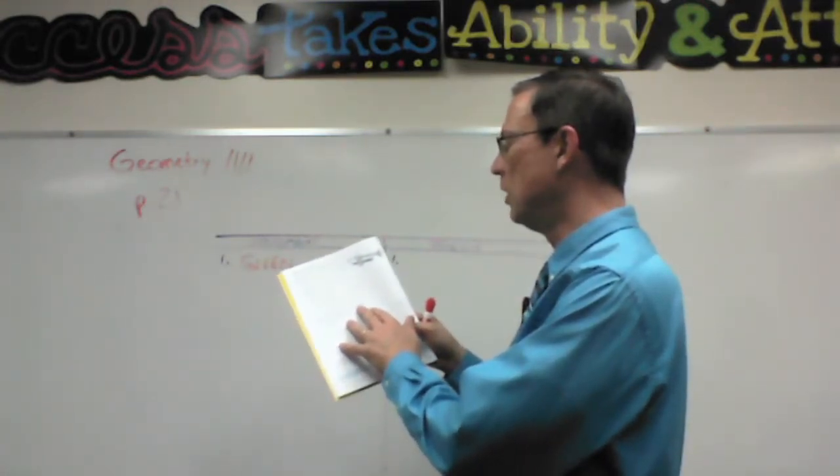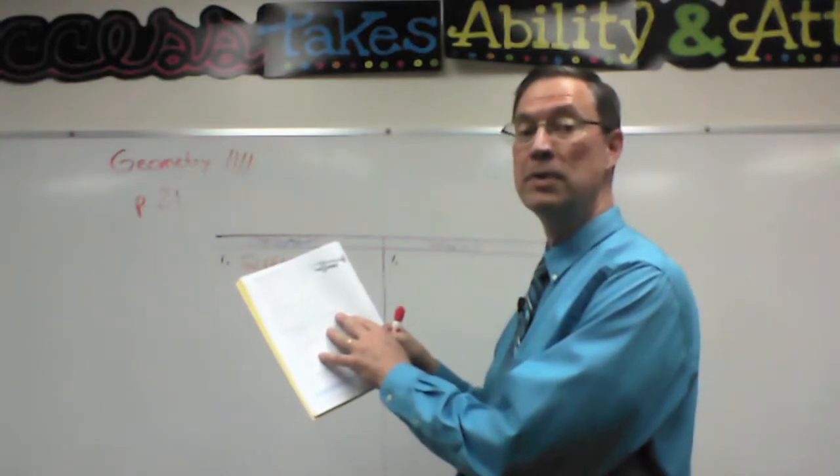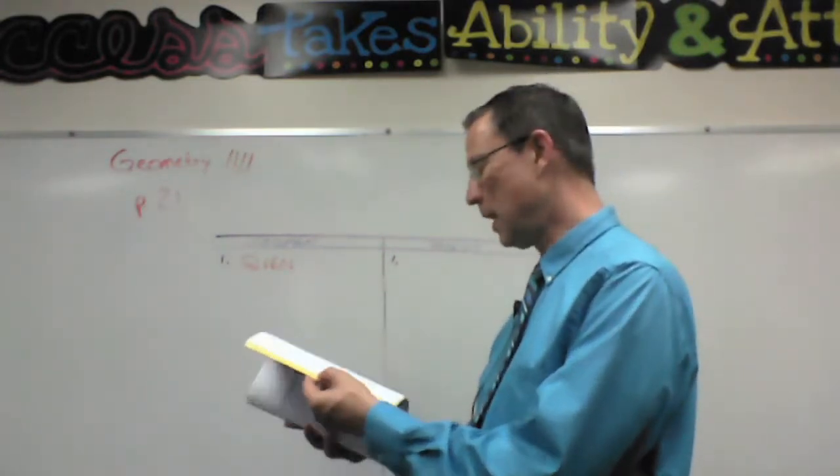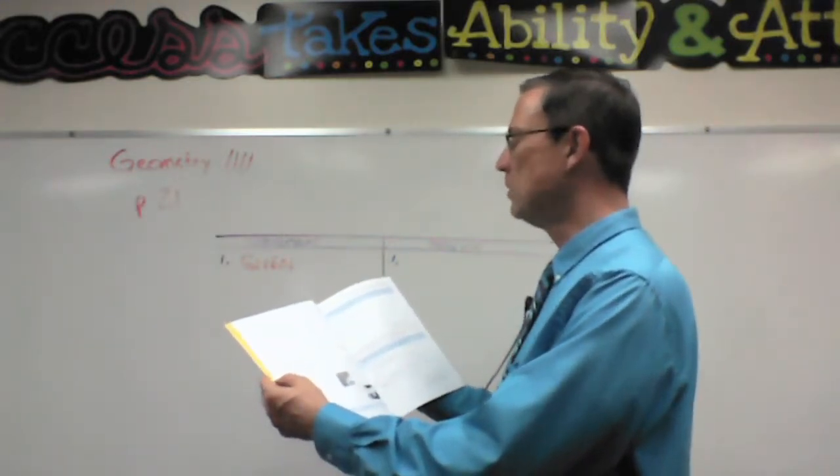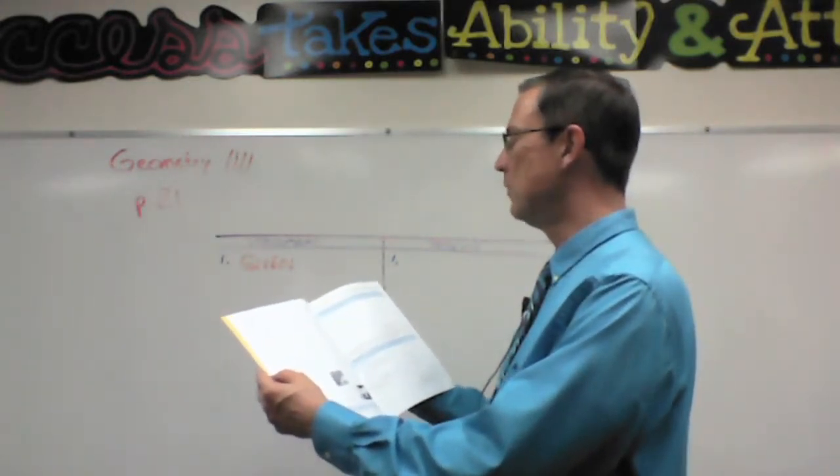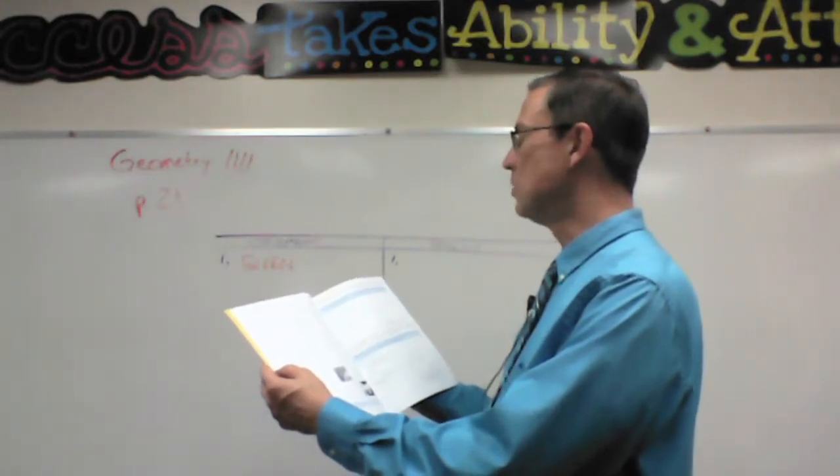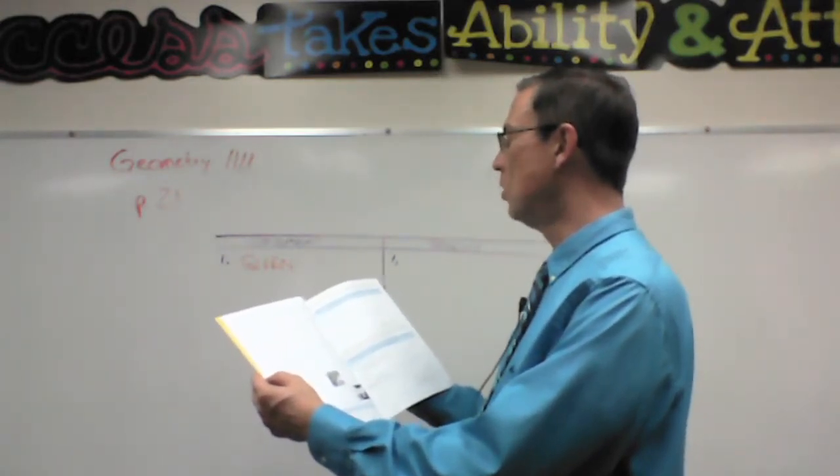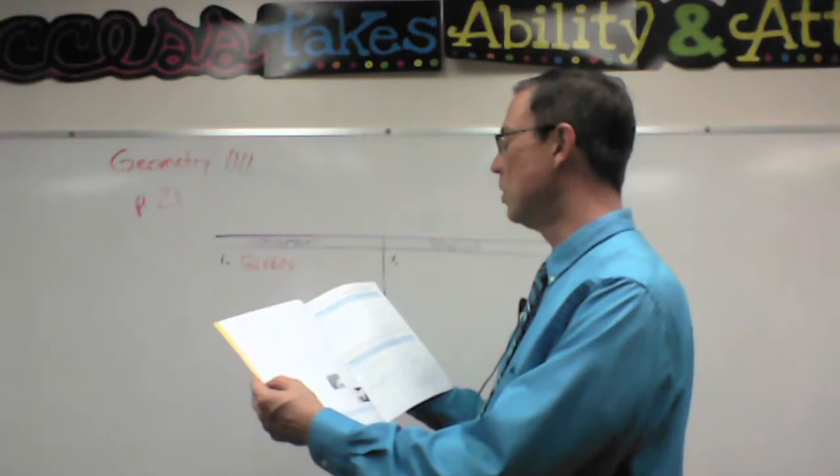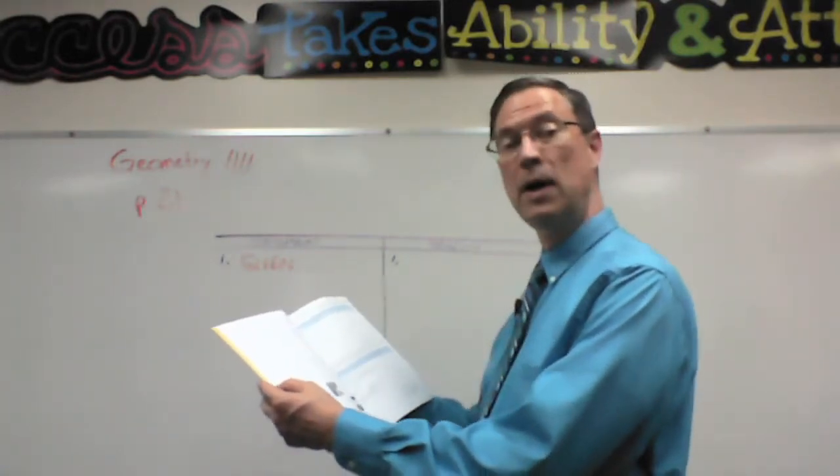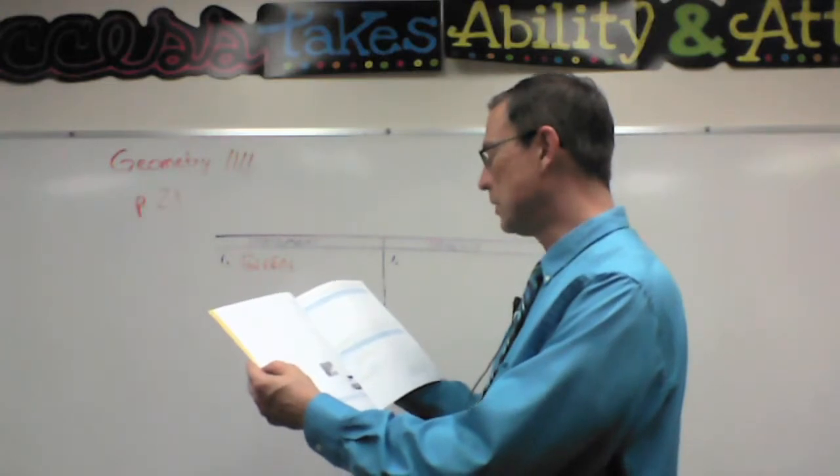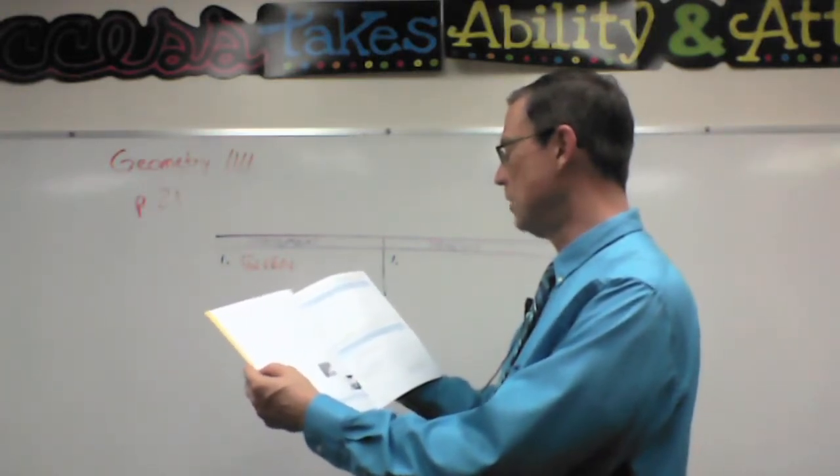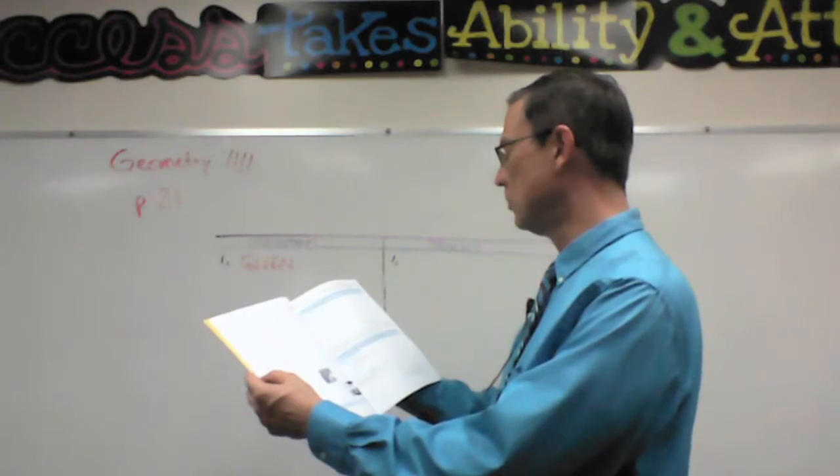And then it does tell us that we're going to use Theorem 15 and Theorem 16. So right away, look at page 20 and notice the blue boxes there. Theorem 15 says if a transversal intersects two lines so that the alternate exterior angles are congruent, then the lines are parallel.